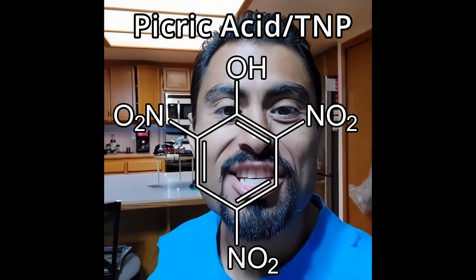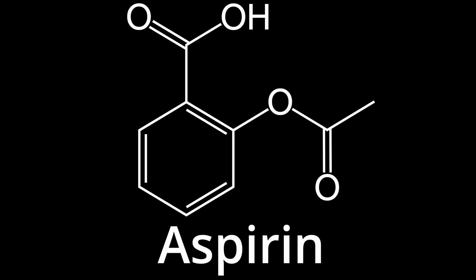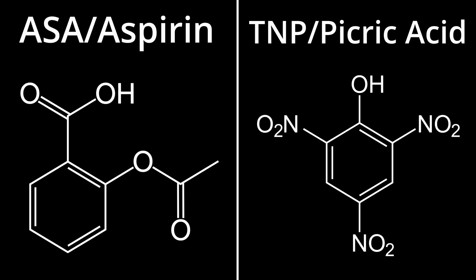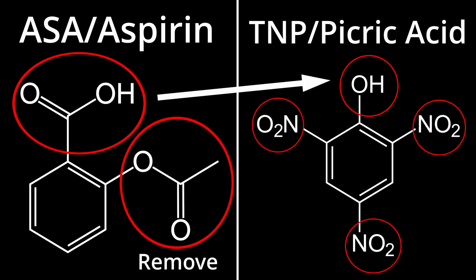Turning aspirin into an explosive known as picric acid. You might be asking how it's even possible to turn a medicine into an explosive — it's because both aspirin (ASA) and picric acid (TNP) aren't that chemically different from each other. It's just a carboxyl group that needs to be changed into a hydroxyl group, an acetyl group that is easy to remove, and then nitro groups that are easy to add.